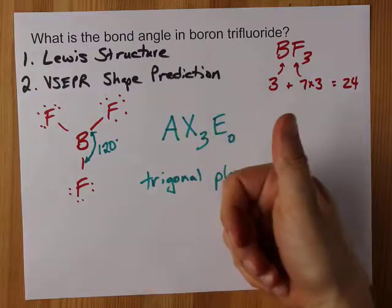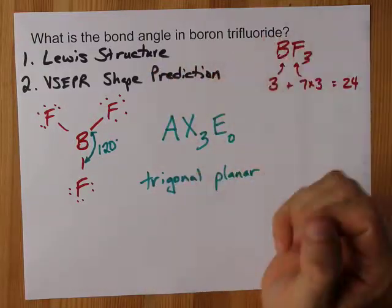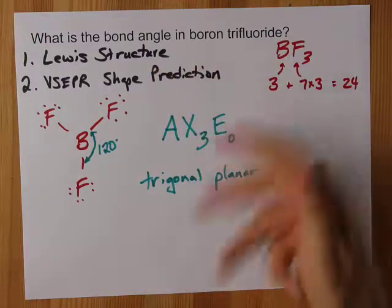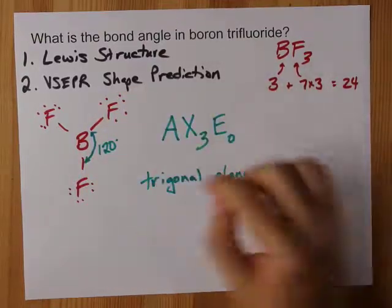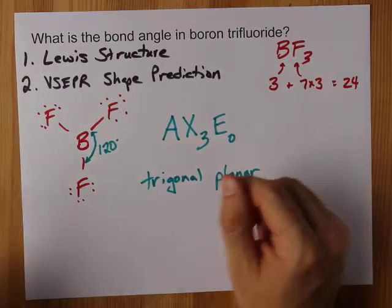It's a little more complicated for tetrahedral, which is generally like 109.5 degrees. Point is, it's 120 degrees because it's a trigonal planar molecule.